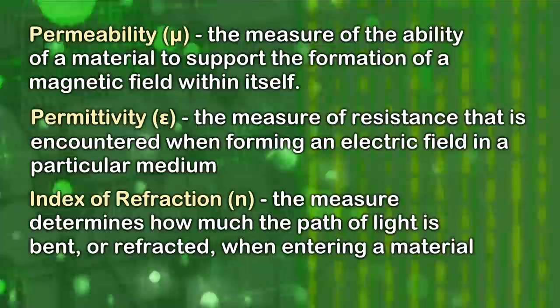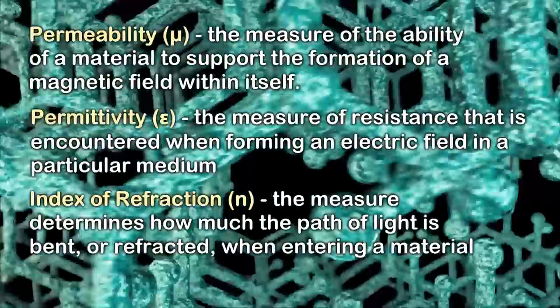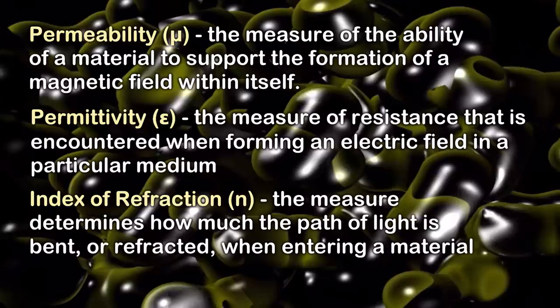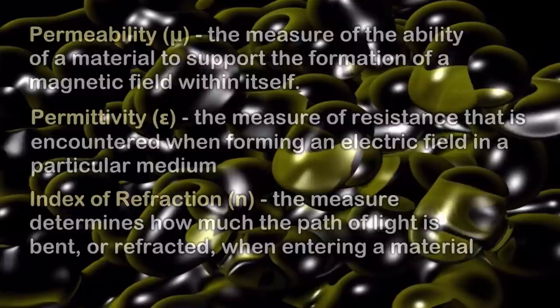Most materials have positive values for permittivity and permeability, but some materials have either a negative permittivity or a negative permeability. No naturally occurring materials have both a negative permittivity and a negative permeability. The metamaterials we are talking about today, though, need both of these to be negative, and we'll get to how to achieve that shortly.